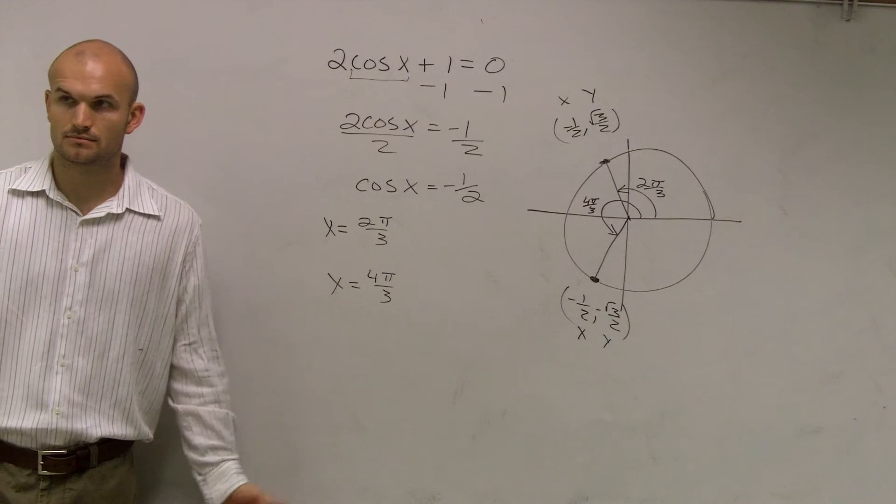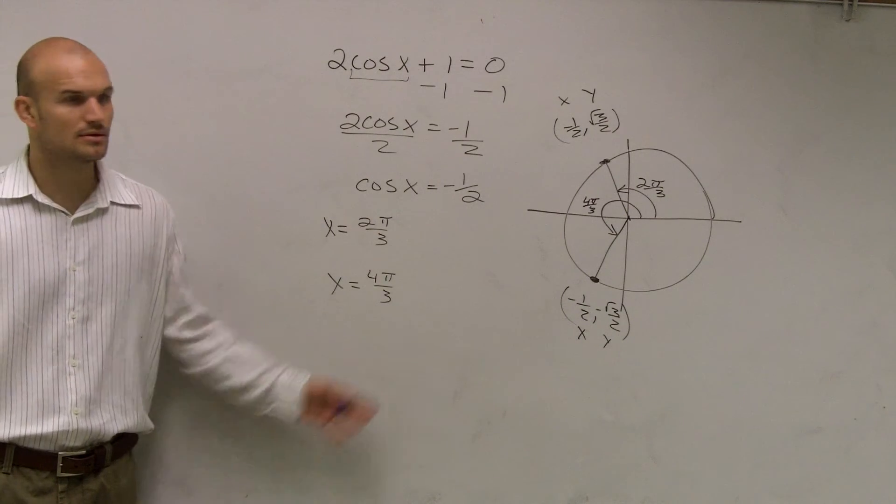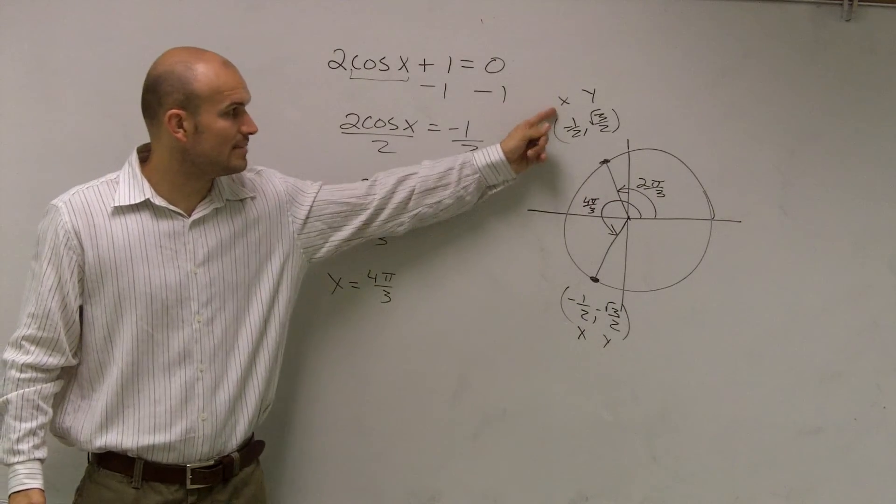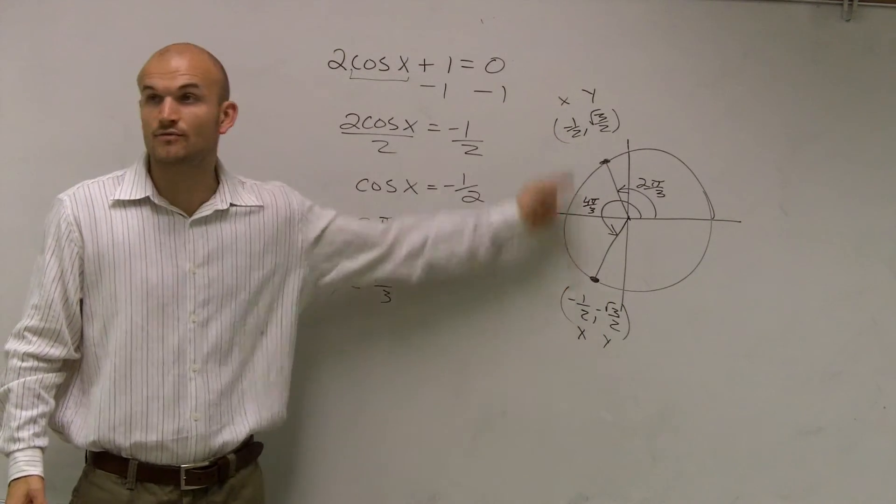Does everybody got that? Does everybody understand? So it equals both of them? Yeah, because both of these values, my cosine, the x value is negative 1 half.